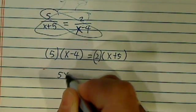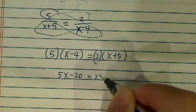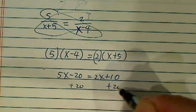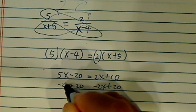And from here it's really easy. You have 5x minus 20 is equal to 2x plus 10. I'm going to add 20 on both sides, and then subtract 2x on both sides.